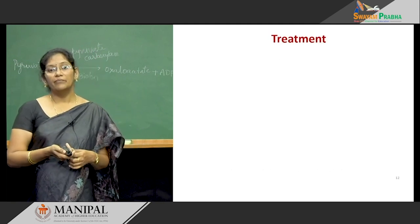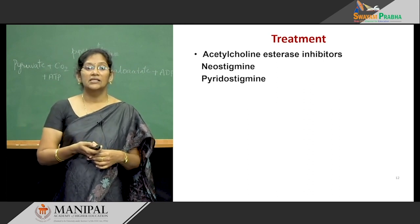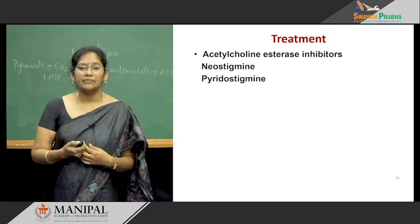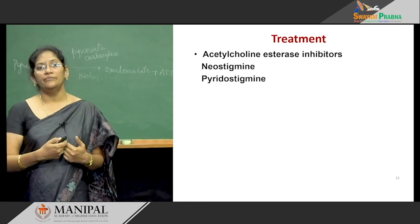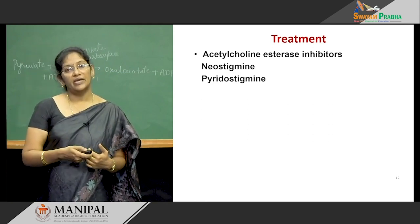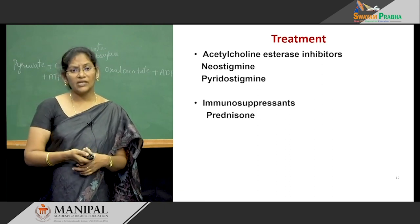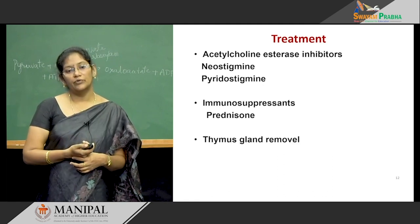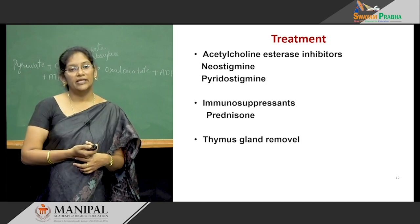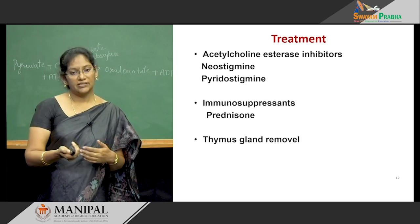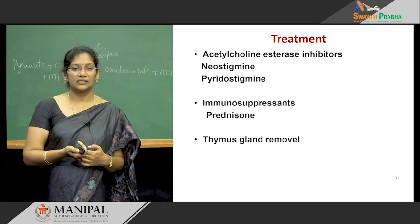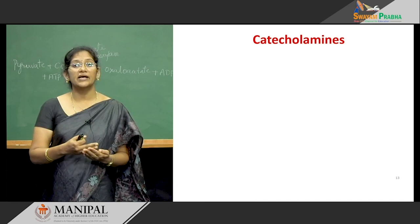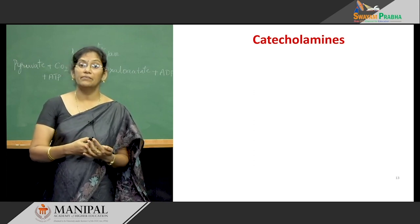For treatment, we mainly use acetylcholinesterase inhibitors — that is neostigmine and pyridostigmine — because acetylcholinesterase immediately hydrolyzes acetylcholine into acetate and choline in the synaptic cleft. Next, immunosuppressants such as prednisolone are used, and also thymus gland removal. The thymus gland is one of the important lymphatic immune system glands, and its removal can mainly help avoid the muscle weakness.